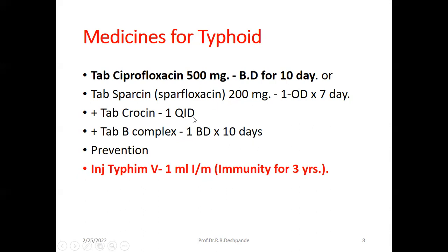Prevention is better than cure. For prevention of typhoid, there is a vaccine — Injection Typhine V, 1 ml intramuscular — and this typhoid vaccine provides immunity for 3 years.